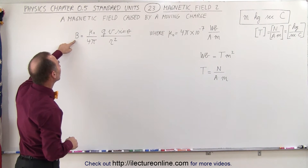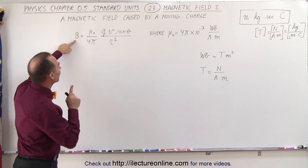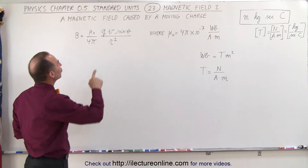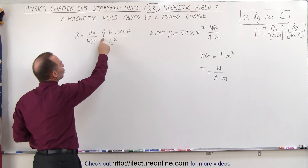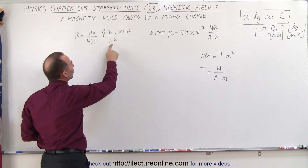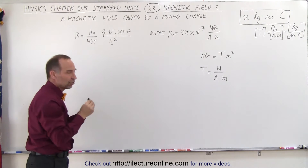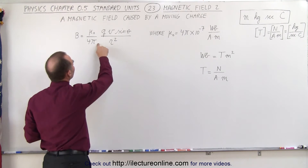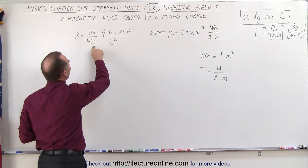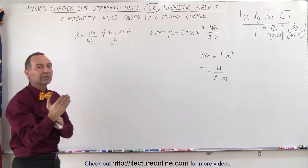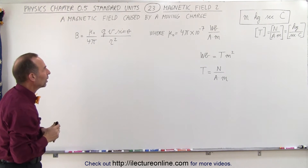Here we have an equation that allows us to find the strength of the magnetic field from a moving charge that has charge q, which is moving with velocity v, and is a distance r squared away from the point of interest where we're trying to measure the strength of the magnetic field. We also multiply by mu sub nought divided by 4 pi, and the sine of theta, because the angle relative to the magnetic field matters as well.